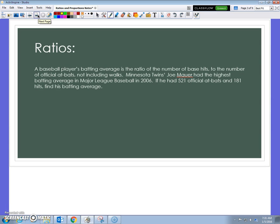So, let's take a look here at this basic ratio problem. It says a baseball player's batting average is the ratio of the number of base hits to the number of official at-bats, not including walks. So, we're comparing the number of base hits to the number of official at-bats. Joe Mauer had the highest batting average in Major League Baseball in 2006. If he had 521 official at-bats and 181 hits, find his batting average.